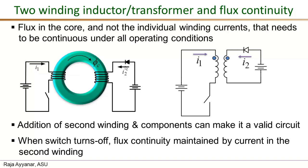If you add a second winding and associated components such that there can be a current in the second winding, then it becomes possible for this circuit to be valid. We still need to look at the dot polarity of the two windings and make sure that the current is in the right direction, but if we ensure that, this becomes a valid circuit. Here is the circuit schematic with the dots representing the correct winding directions.